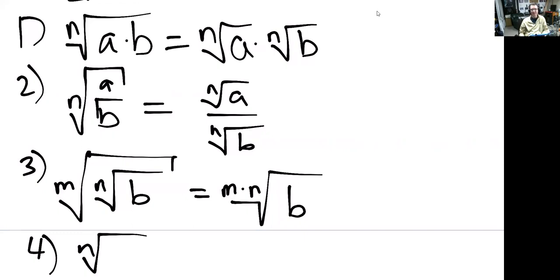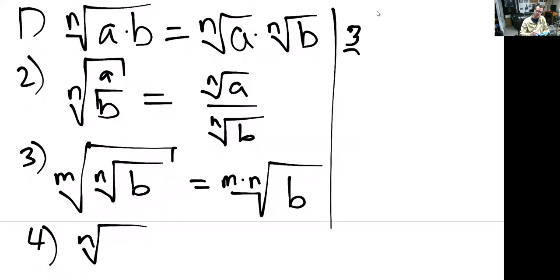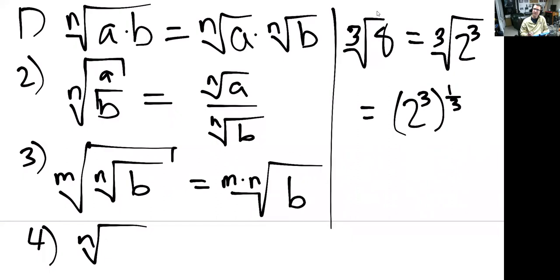The next one's super simple. This is like the most important one for simplifying. It's exactly what you do every time you see something like the third root of eight. Well, eight is equal to two cubed. So this is the same as two cubed to the one third power. Multiply the exponents. Two to the three times one third is one. It's two.